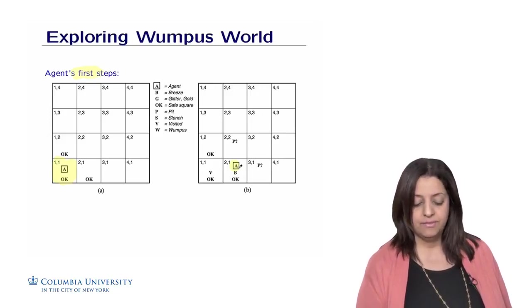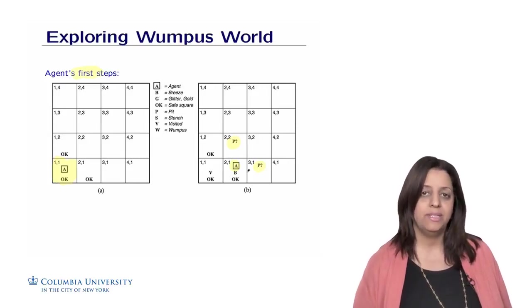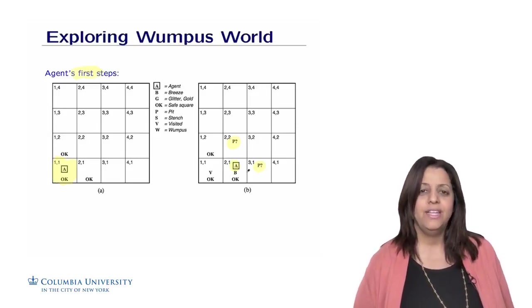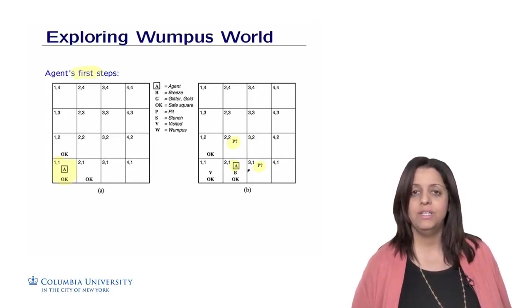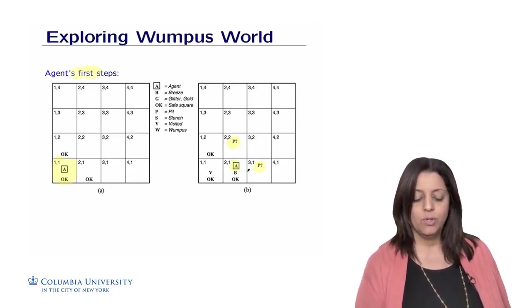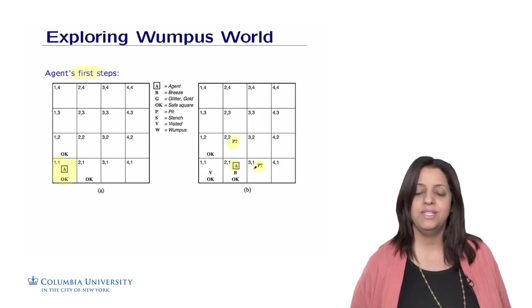This room is visited, but this room has actually a breeze, which means that there is potentially a pit here or here. So I'm going to add a question mark to the symbol P to say, is this a pit? So here the agent will think and not make any hazardous action. So it needs to really be careful. The agent will need to come back, to go back to where it came from, and explore maybe room 1-2 before moving forward to any of these rooms.